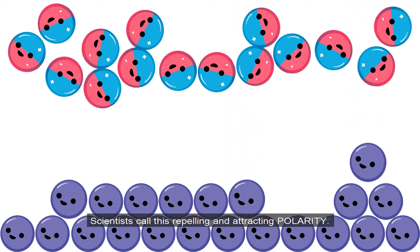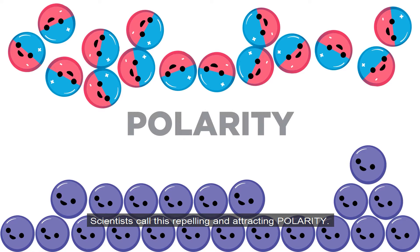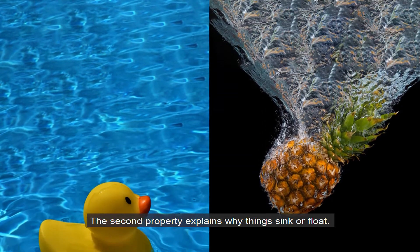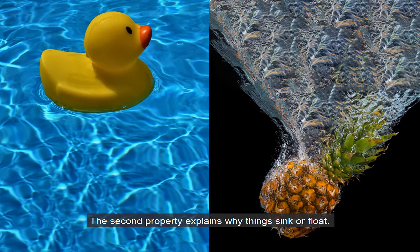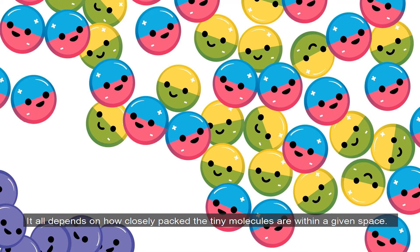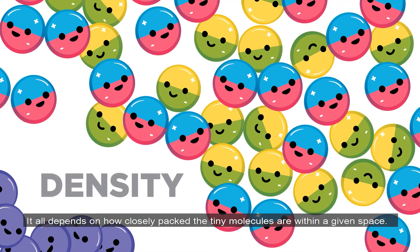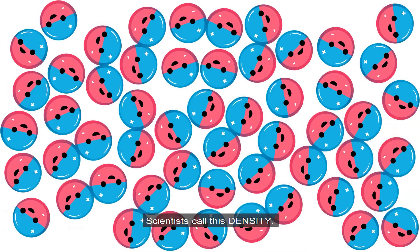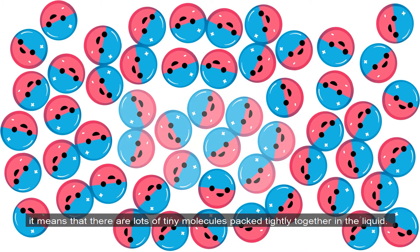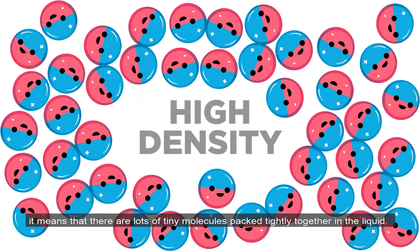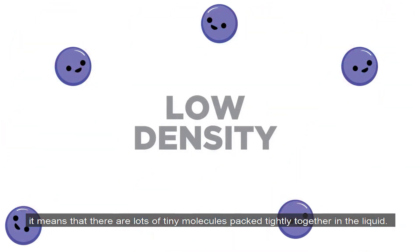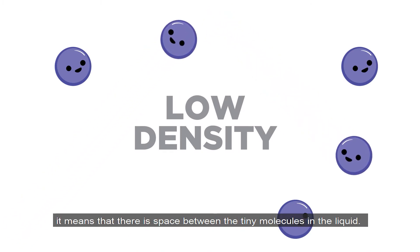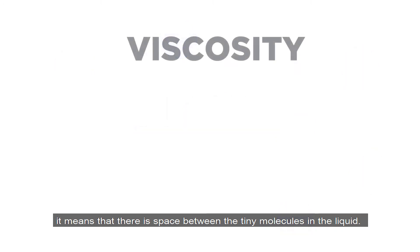Scientists call this repelling and attracting polarity. The second property explains why things sink or float. It all depends on how closely packed the tiny molecules are within a given space. Scientists call this density. If a liquid has high density, it means there are lots of tiny molecules packed tightly together. If a liquid has low density, it means there is space between the tiny molecules in the liquid.